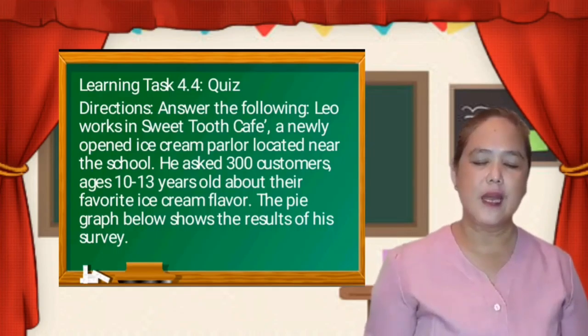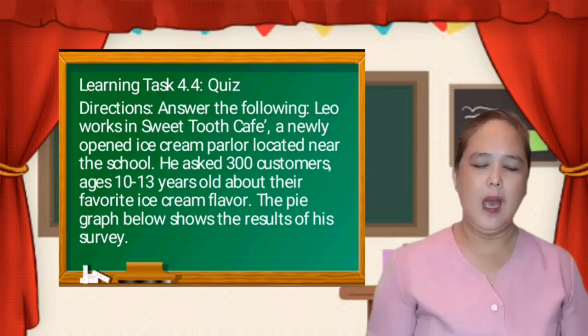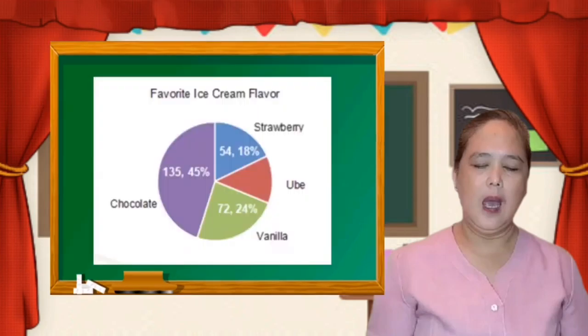For learning task 4.4, answer the following. Leo works in a Sweet Tooth Cafe, a newly opened ice cream parlor located near the school. He asks 300 customers, ages 10 to 13 years old, about their favorite ice cream flavor. The pie graph below shows the result of his survey. For strawberry: 54 or 18%. For vanilla: 72 or 24%. For chocolate: 135 or 45%. For ube: unknown.